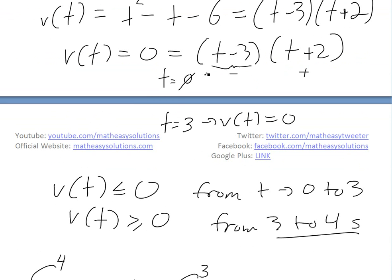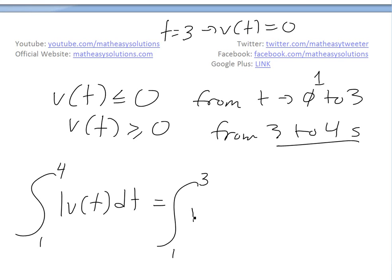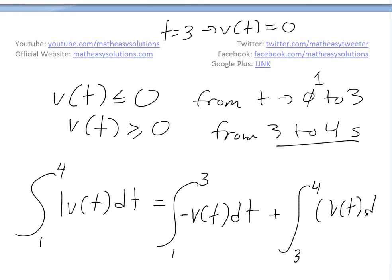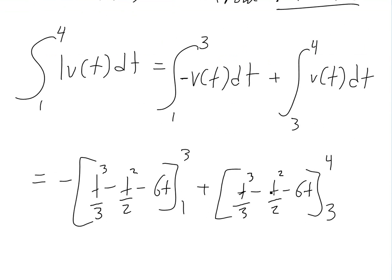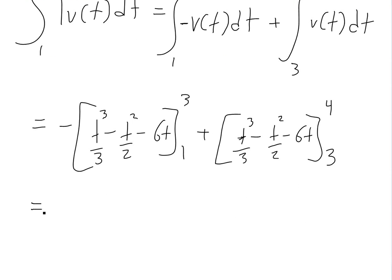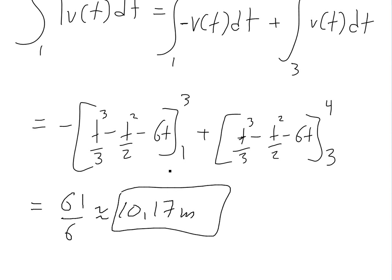So we split into two integrals: the integral from one to three of negative V(t) dt, because the velocity is negative there, plus the integral from three to four of V(t) dt. We take the anti-derivative for each. Solving this gives 61 over 6, which is roughly equal to 10.17 meters. This is the total distance traveled — compare this with the negative 4.5 meters displacement, which just means the particle traveled to the left.